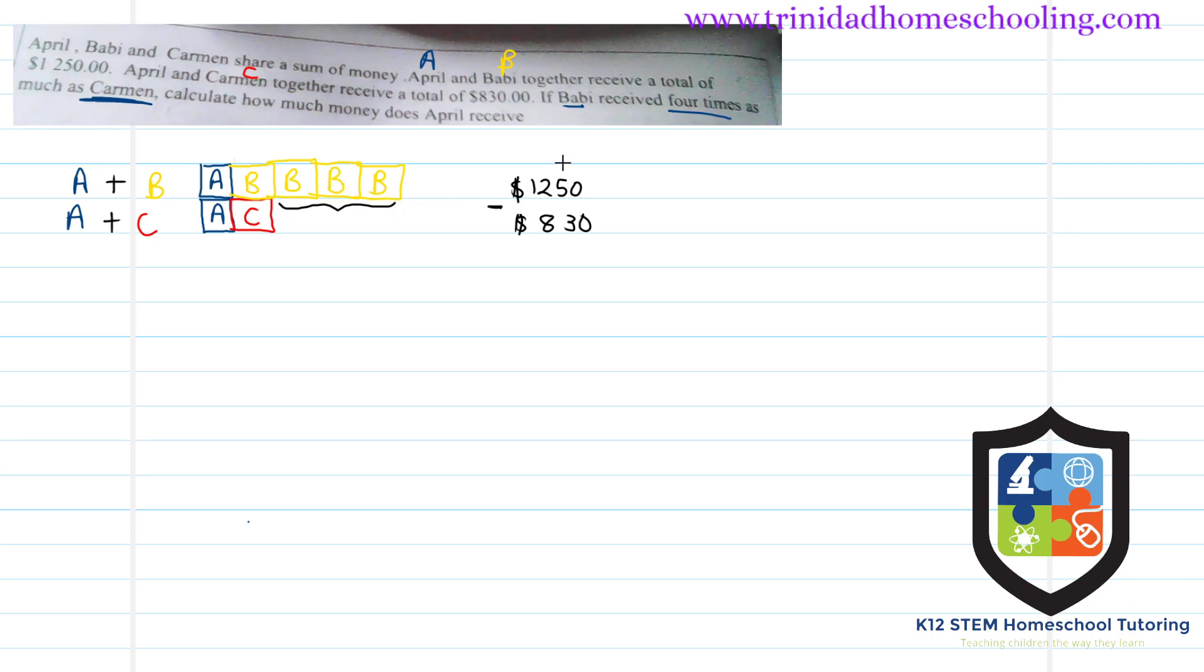That difference would be these three equal portions of Barbie's. That difference could be found by subtracting their total amounts. So if we subtract that, we would get $420. This difference here is $420.